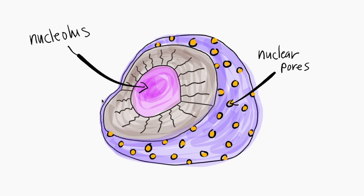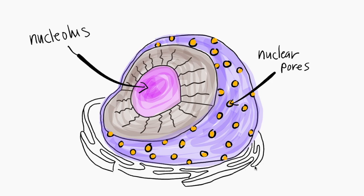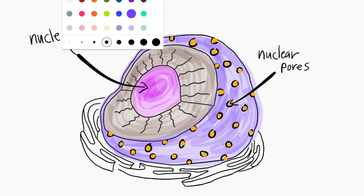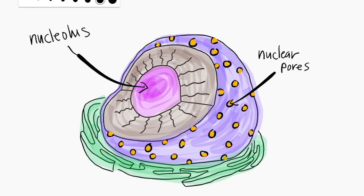Now let's talk about ribosomes. These are one of many types of organelles. Similar to how we as animals and creatures have organs inside our bodies, cells have organelles inside theirs. Ribosomes are organelles composed of proteins and rRNA. They can be found mostly attached to the endoplasmic reticulum, as well as a few free-floating ones in the cytoplasm. The ribosome is where protein synthesis occurs, and the difference between those attached to the endoplasmic reticulum and those free-floating are the different destinations of the protein it synthesizes.